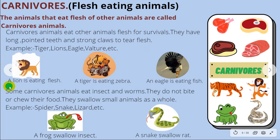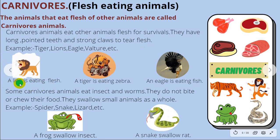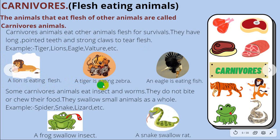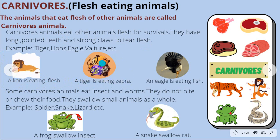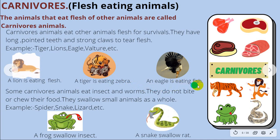A lion is eating flesh. A tiger is eating a zebra. An eagle is eating fish. These are examples of carnivorous animals.